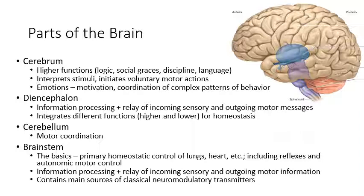The cerebellum is at the bottom and back of the brain. It's all about motor coordination — evolutionarily extremely important, since hunting or fleeing a predator requires a high degree of motor coordination. Finally, you have the brainstem, which handles all the most basic aspects of homeostasis — control of your lungs and heart, reflexes, and your autonomic motor system, which controls your involuntary muscles and glands. Sensory information from the spinal cord passes through the brainstem on its way up, and motor information from the cerebrum passes through on its way down.